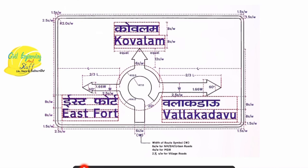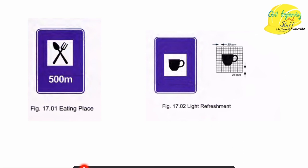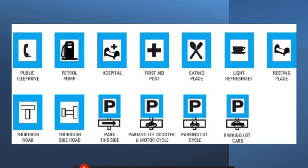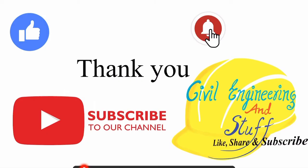Another example of an informatory sign shows a rectangular shape with blue background and symbol. There are other standards used for expressways, national highways, and Asian highways. These are some of the examples of informatory signs that we commonly see.